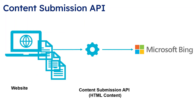The Content Submission API enables websites to directly send content to Bing whenever website content is updated or created, without waiting for Bing Bot to crawl the content. Bing also has a URL Submission API that websites can call to notify Bing whenever content is updated or created, allowing instant crawling, indexing, and discovery of your website content.